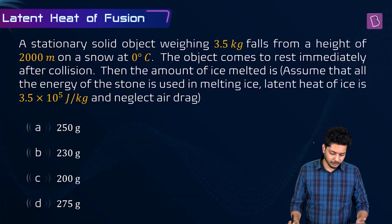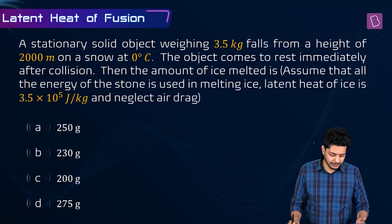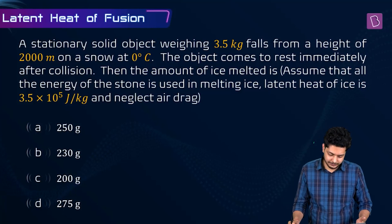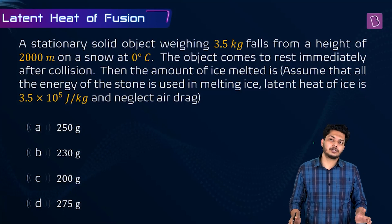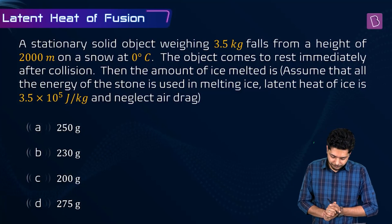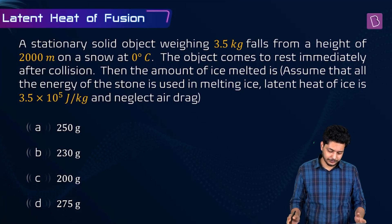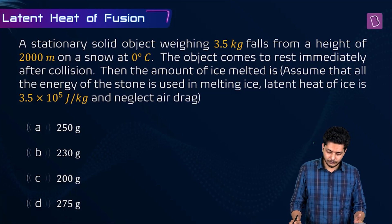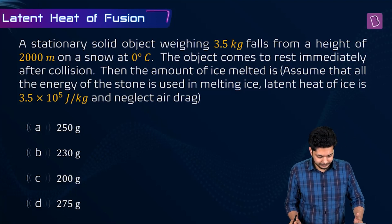A stationary solid object weighing 3.5 kg falls from a height of 2000 meters onto snow at 0°C. The object comes to rest immediately after collision. We need to find the amount of ice melted, assuming all energy is used in melting. The latent heat of ice is 3.5 × 10⁵ joules per kg.